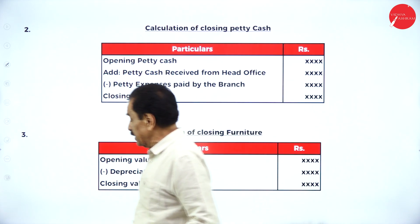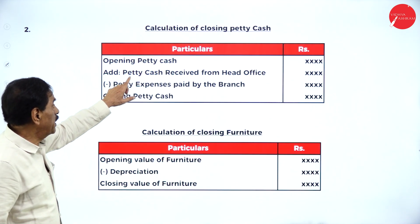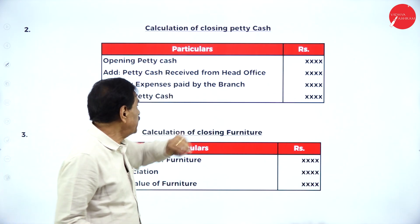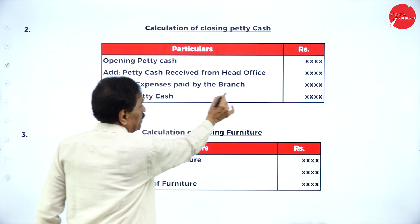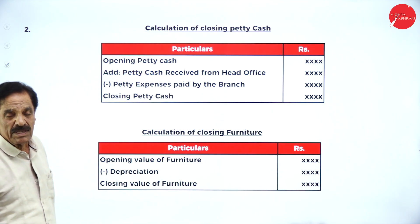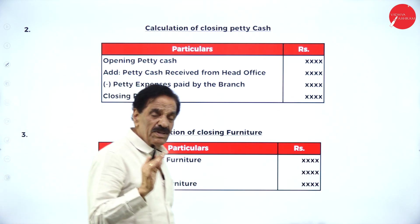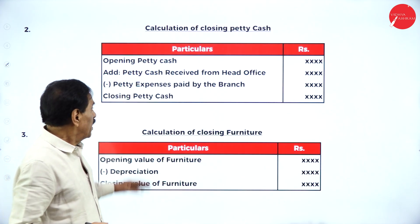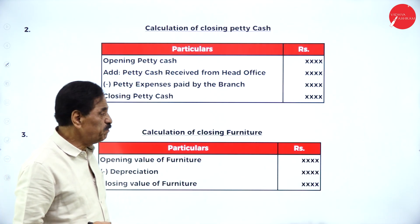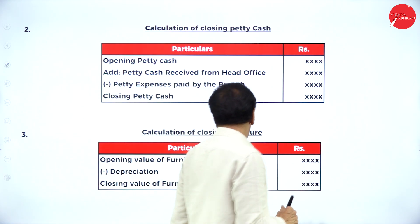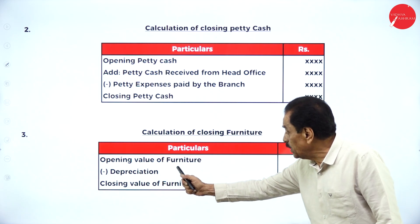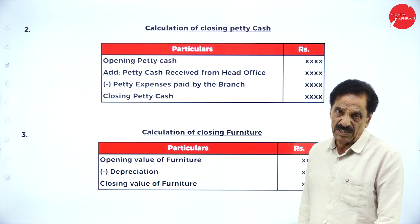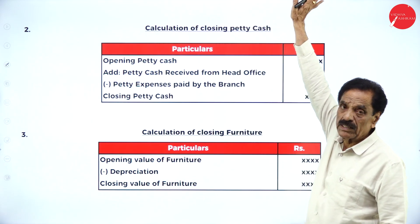Calculation of closing petty cash: opening petty cash balance, add petty cash received from the head office, minus petty expenses paid by the branch — whatever balance comes, that is the closing petty cash. For closing value of furniture: opening value of furniture minus depreciation equals the closing value of furniture. The same approach should be adopted in the branch account.